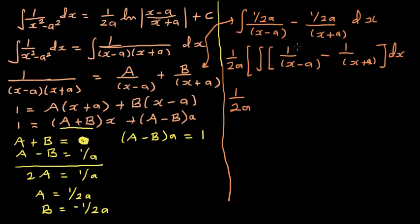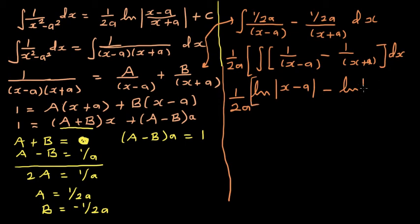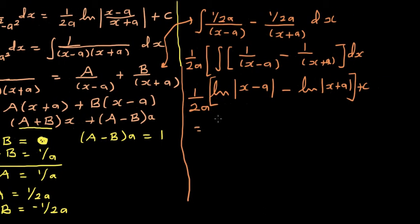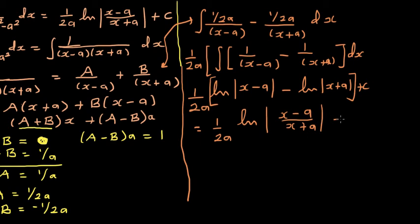Distributing the integration and applying the inverse chain rule, the integration of 1 over x minus a gives natural log of x minus a, and minus 1 over x plus a gives minus natural log of x plus a, plus the constant of integration. Applying log rules, the final answer is 1 over 2a times natural log of x minus a over x plus a, plus c.